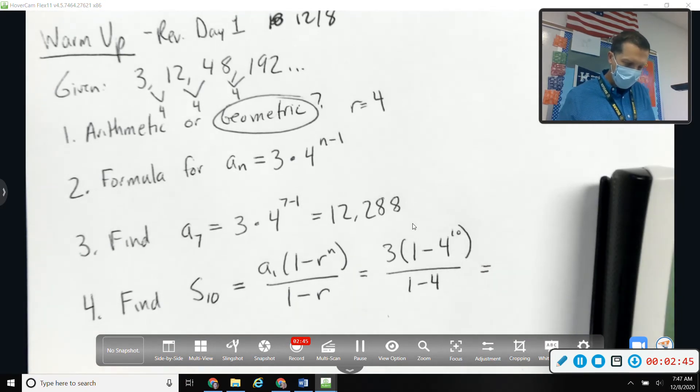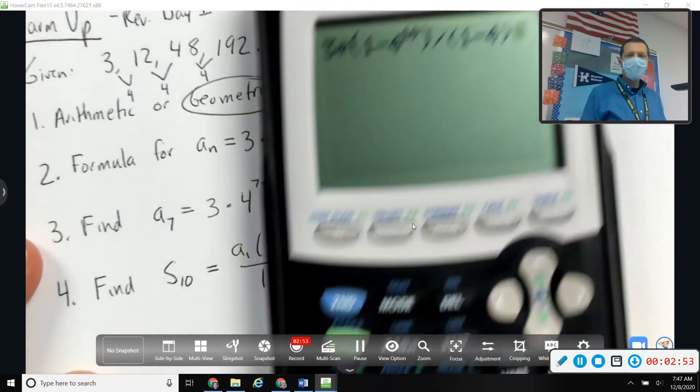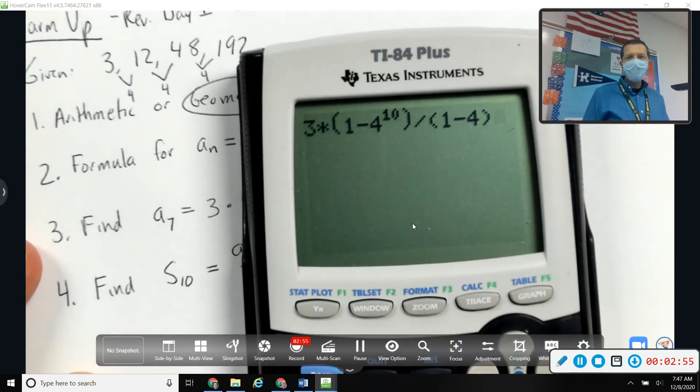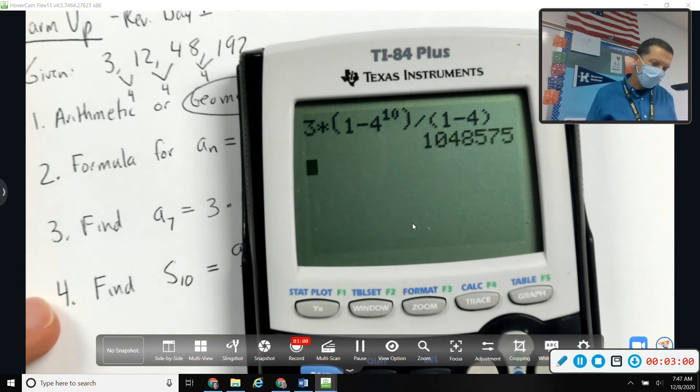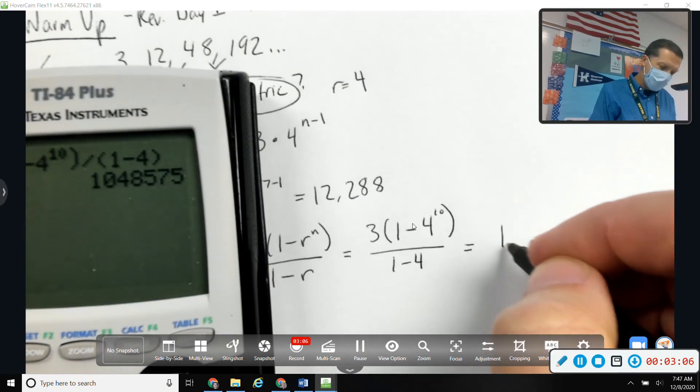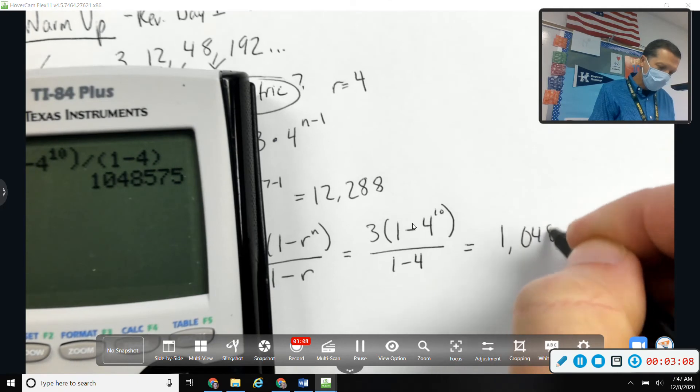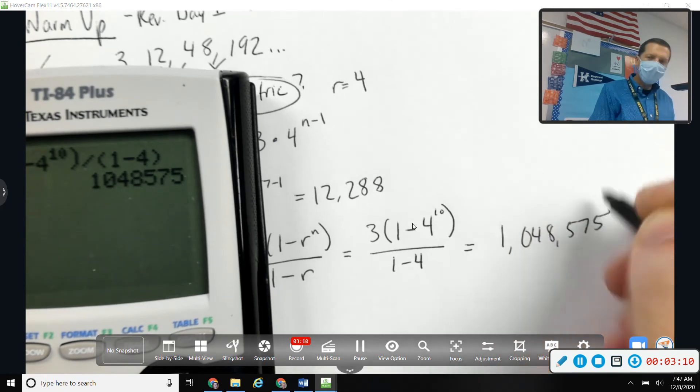Three times one minus four to the tenth divided by one minus four. Put it on, you can see it there. Be careful with the fraction stuff. I could have used the fraction bar as well. So one million, I think I heard somebody say that number: one million forty eight thousand five hundred seventy five.